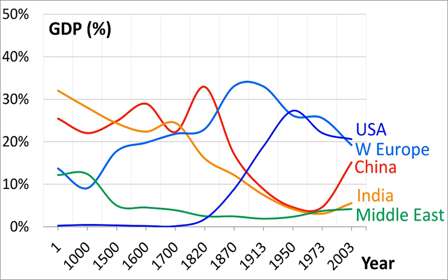The Indian economy grew at about 1% per year from 1880 to 1920, and the population also grew at 1%. The result was, on average, no long-term change in income levels. Agriculture was still dominant, with most peasants at the subsistence level. Extensive irrigation systems were built, providing an impetus for growing cash crops for export and for raw materials for Indian industry, especially jute, cotton, sugarcane, coffee and tea. Agricultural income imparted the strongest effect on GDP.